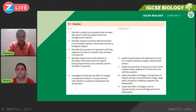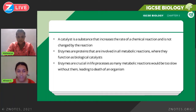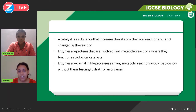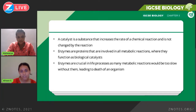Starting off, you need to know what a catalyst is. If you take IGCSE Chemistry, you should have a brief idea — a catalyst is a chemical substance that increases the rate of a chemical reaction and is not used up or changed by the reaction itself. The catalyst is present in the reactants the same way as it is in the products, so it doesn't change in any way and doesn't get used up. Its only purpose is to speed up a reaction.